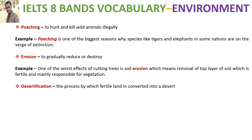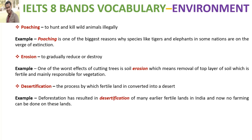'Desertification' is the process by which fertile land is converted into a desert. According to the example, deforestation has resulted in the desertification of many earlier fertile lands in India, and now no farming can be done on these lands.